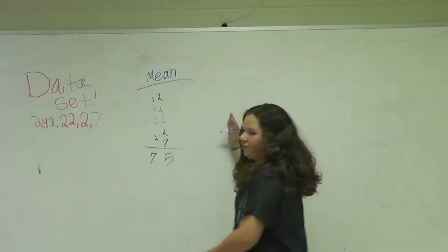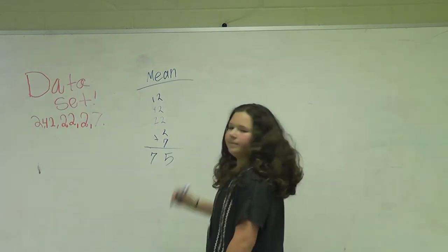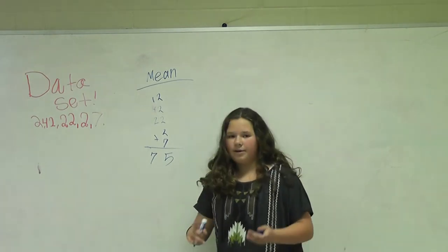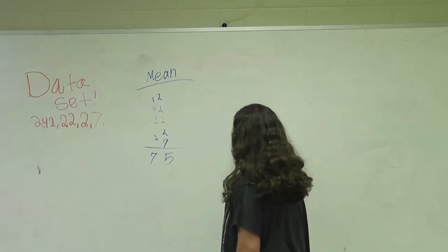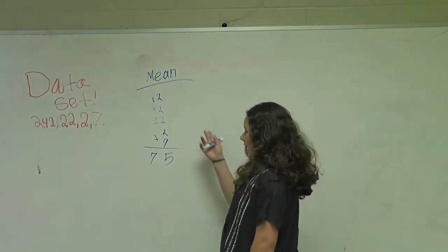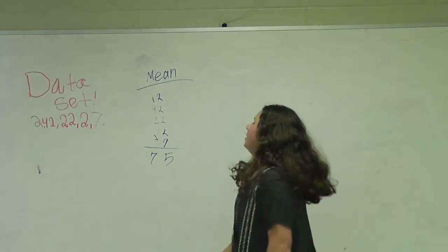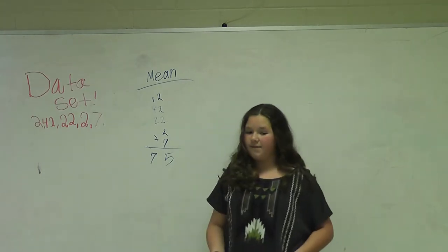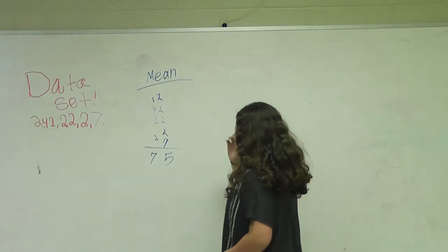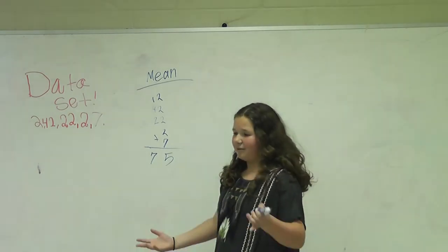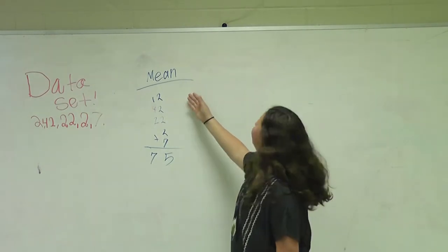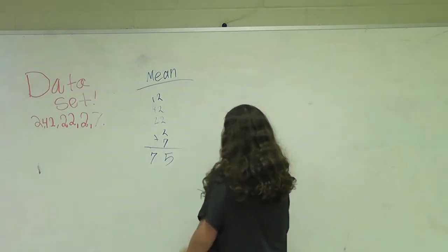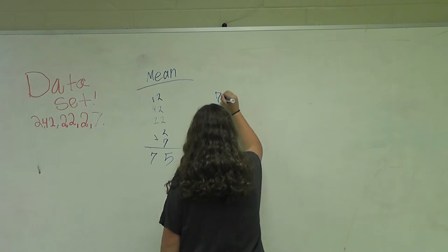But that just doesn't make sense. So you might think that we're done with our mean and you think it was not easy at all, but it's not. So we still have one more step to find our mean. Now you have to take 75 and divide it by how many numbers you have in your data set. You have 1, 2, 3, 4, 5. 5 numbers in your data set.